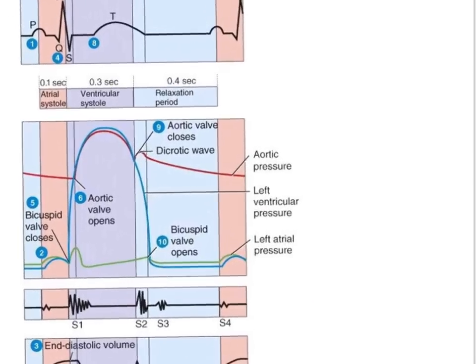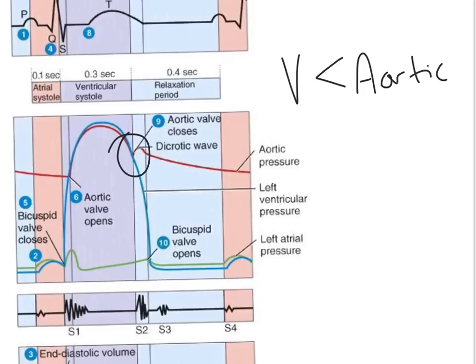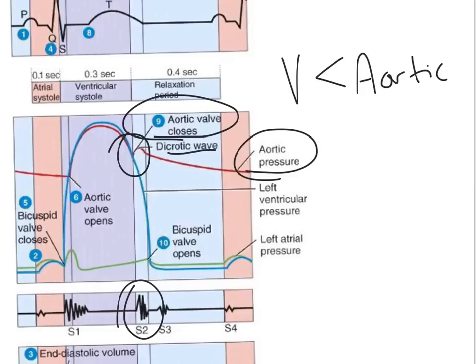As the ventricular pressure continues to decrease, at a certain point the ventricular pressure goes below the aortic pressure. This causes the semilunar valves to close — the aortic valve closes — and that is associated with S2, the second heart sound. As the valve closes, you then see what's called the dicrotic wave, where there's a slight increase in the aortic pressure, similar to what happened when the bicuspid valve closed.